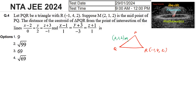We know that the centroid is the point of concurrence of the medians. The line segment joining a vertex to the midpoint of its opposite side is called the median. So RM is the median, and the centroid divides the median in the ratio 2:1 from the vertex.